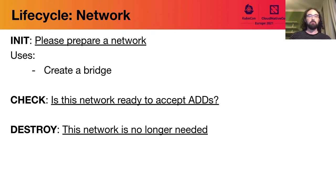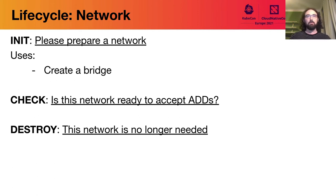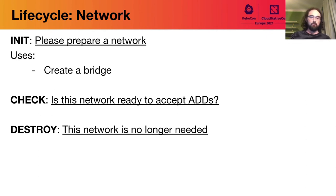You can imagine a network having an init — network plugins creating shared resources such as bridges and firewall rules when the network itself is created. Checking a network would mean checking whether the network is configured and ready to accept attachments — solving the problem of no way to check network status. And a destroy or delete for a network would mean saying this network is no longer needed: please tear down any attachments and delete any shared resources. That's network lifecycle, somewhat akin to attachment lifecycle.